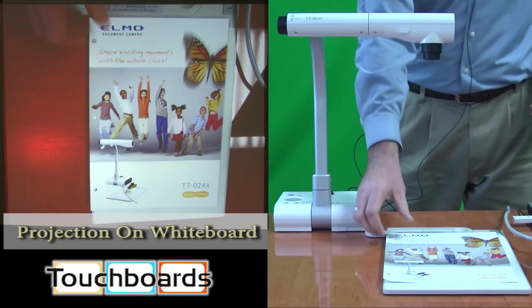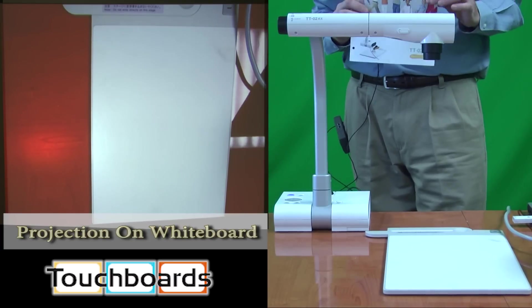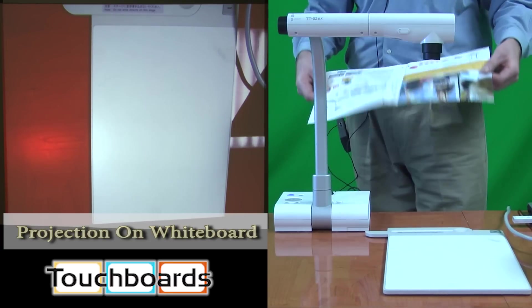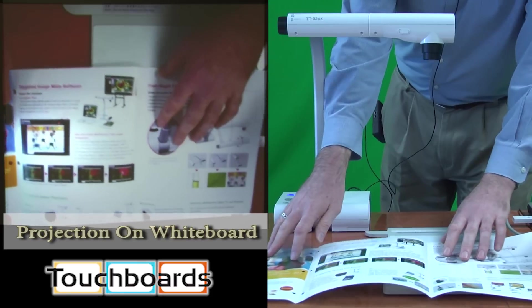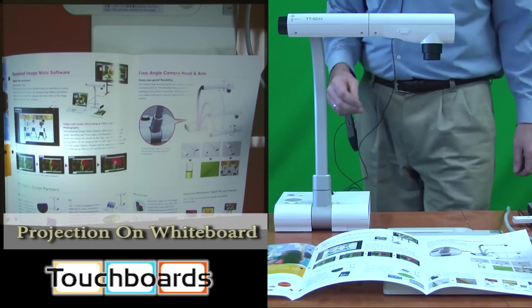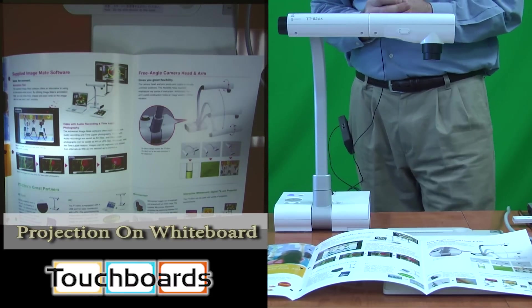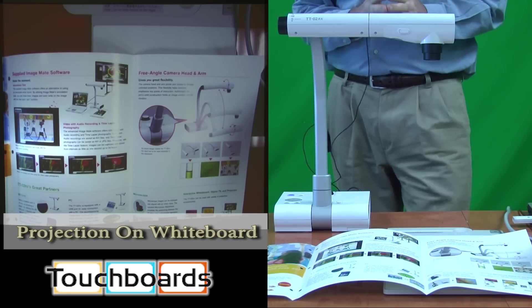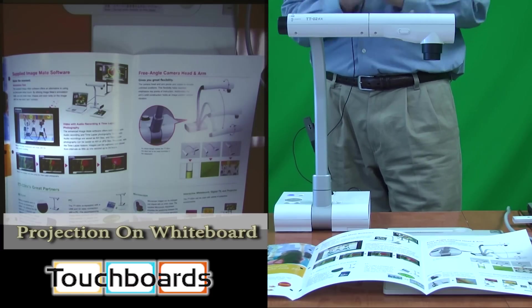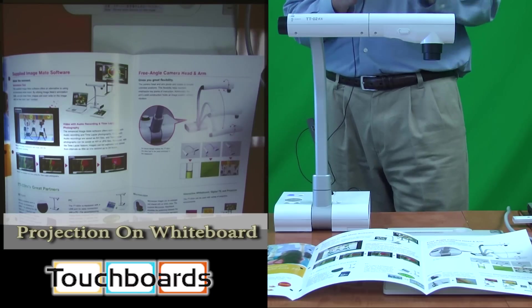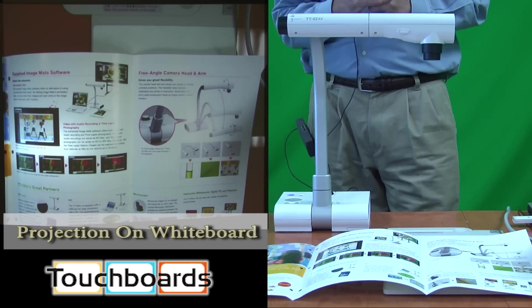The idea behind the camera is that it is a digital overhead projector. We can take any three-dimensional or hard copy materials, such as this TT-02 brochure, lay it on the stage or on the desktop, and we can show it live to the class. We have a board set up and a projector so that you can see the output image. It is very important to understand that we do need a display product, like a projector or an LCD or a plasma, in order to view the output from the document camera.